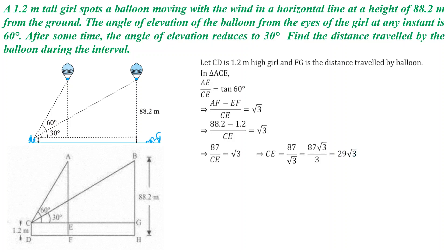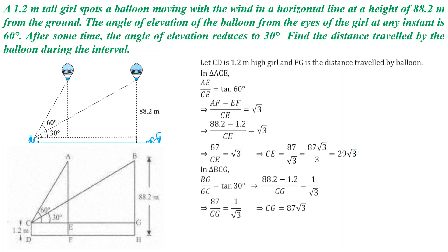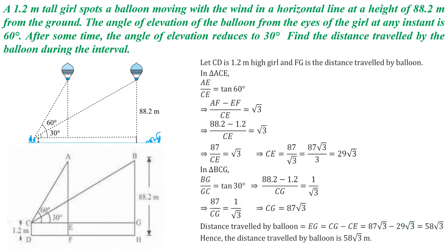Proceeding in the same manner, we go to triangle BCG. In triangle BCG, applying tan theta, tan 30 equals BG upon CG. BG will again be 87 meters. On simplification, CG equals 87 root 3. So the distance from C to G is 87 root 3, whereas from C to E it is 29 root 3. To calculate EG, we subtract CE from CG, giving us 58 root 3. So the distance travelled by the balloon in that particular interval is 58 root 3 meters.